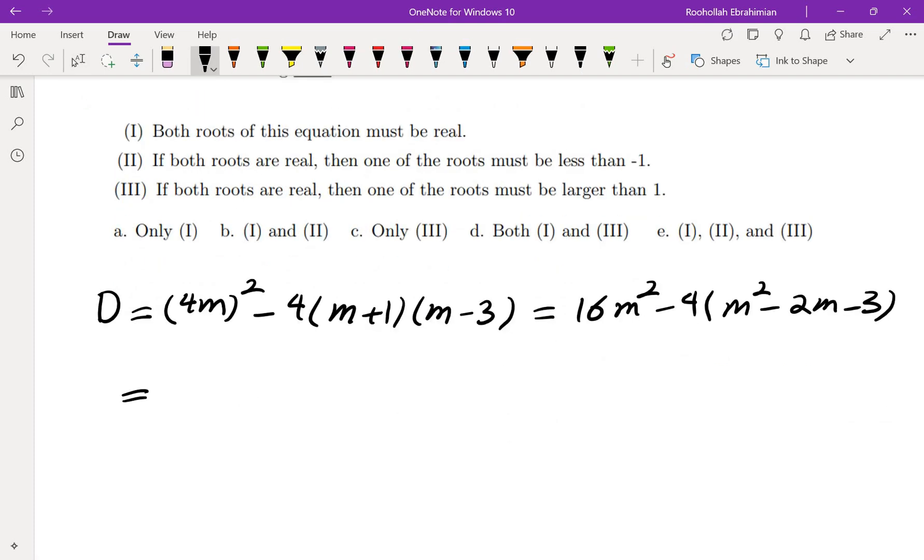Okay so for simplicity we're going to factor a 4. That gives us 4m² - m² + 2m + 3. We want to see if this quadratic is positive or not. If it is positive then both roots must be real. So this is 3m² + 2m + 3.